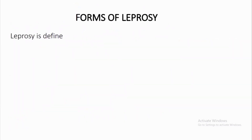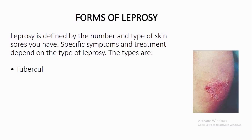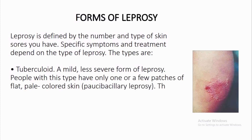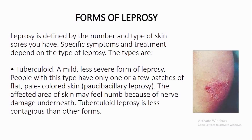Forms of leprosy. Leprosy is defined by the number and type of skin sores you have. Specific symptoms and treatment depend on the type of leprosy. Tuberculoid: a mild, less severe form of leprosy. People with this type have only one or a few patches of flat, pale-colored skin — paucibacillary leprosy. The affected area of skin may feel numb because of nerve damage underneath. Tuberculoid leprosy is less contagious than other forms.